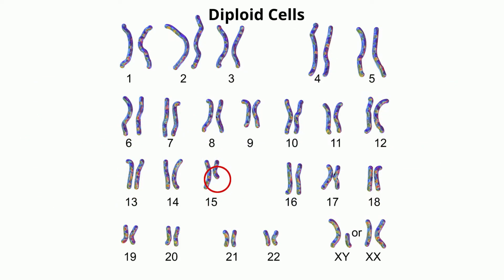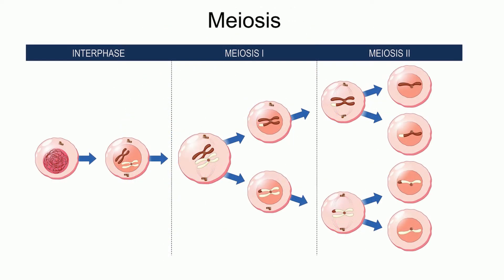In humans, somatic cells are diploid, meaning they contain two sets of chromosomes, one inherited from each parent. Gametes, on the other hand, are haploid and contain only one set of chromosomes.